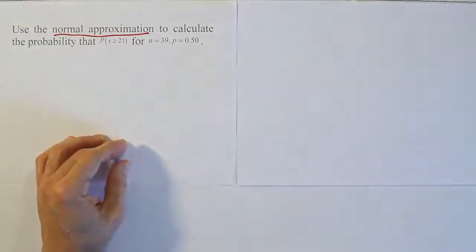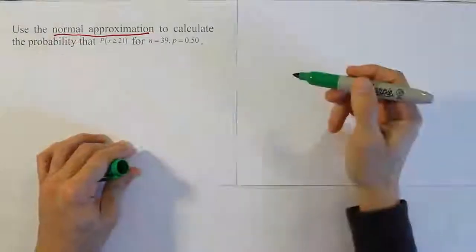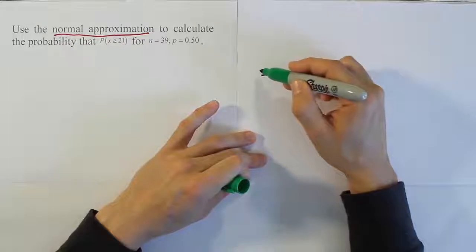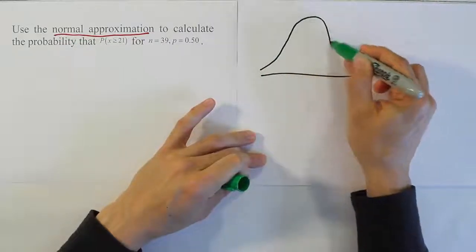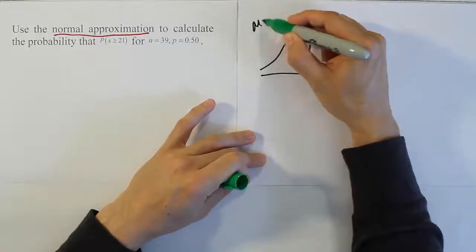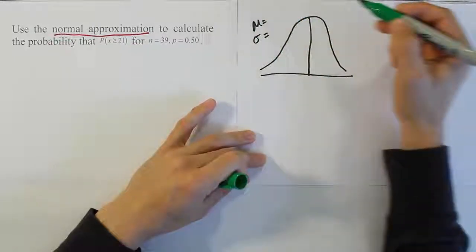When working with a normal approximation, you should draw the bell curve. As we saw in the last video, you want to calculate the mean and the standard deviation using the formulas for binomial probability. So we're going to need to get the mean and the standard deviation for the problem.